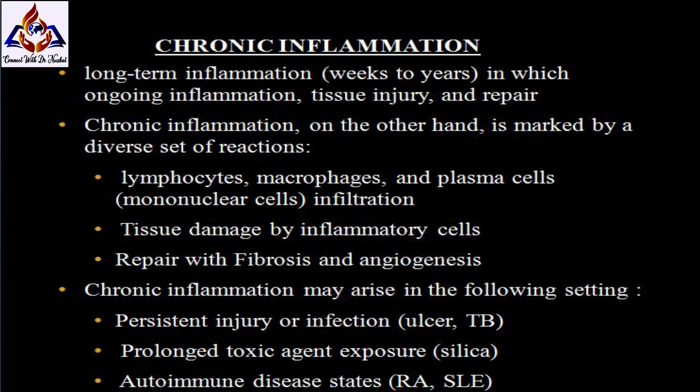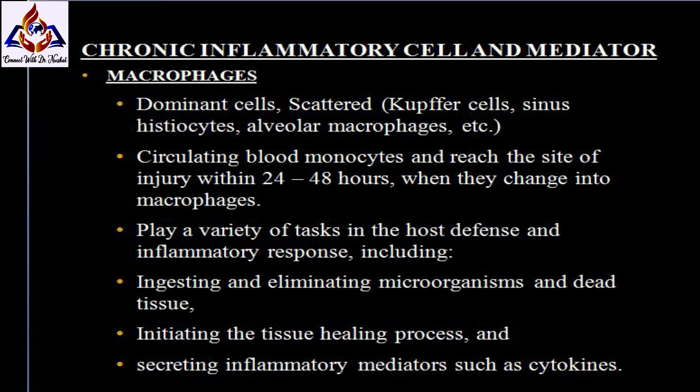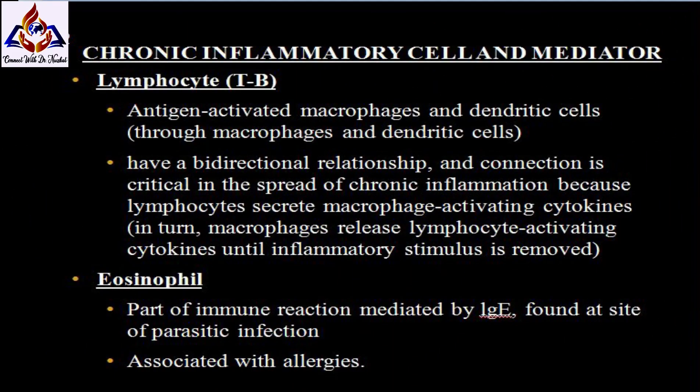Chronic inflammatory cells and mediators: macrophages are the dominant cells. They are derived from circulating blood monocytes and reach the site of injury within 24 to 48 hours, when they differentiate into macrophages. Macrophages play a variety of roles in host defense and the inflammatory response, including ingesting and eliminating microorganisms and dead tissue, initiating the tissue healing process, and secreting inflammatory mediators such as cytokines.